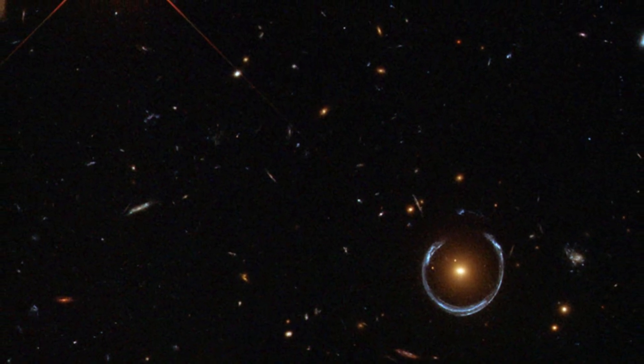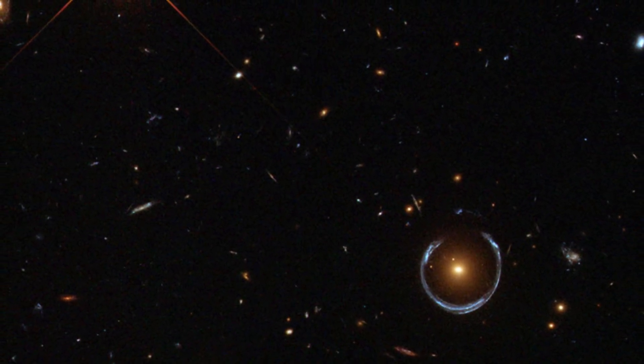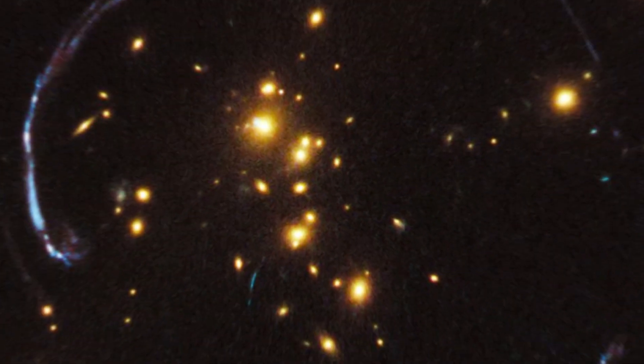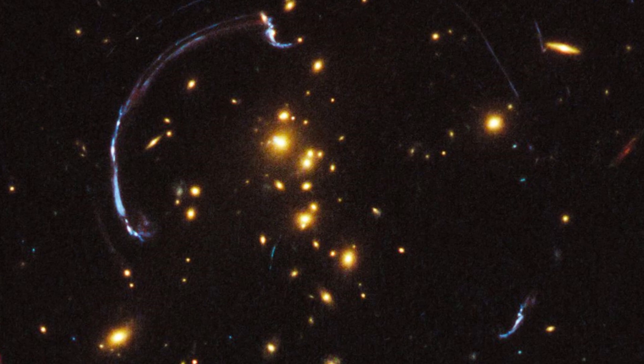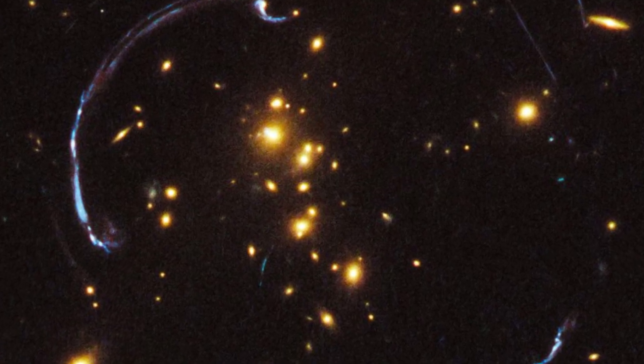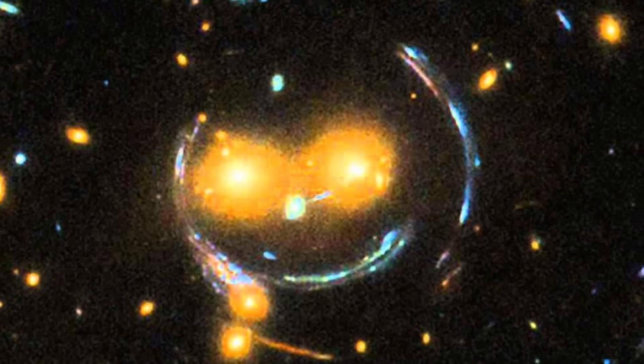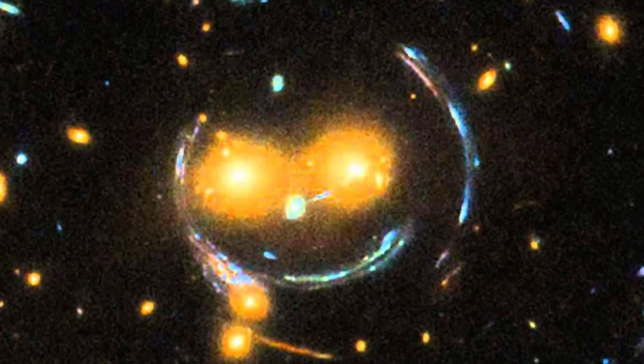Initially, it was entirely plausible that gravitational lensing might have caused these objects to appear larger than they actually were. This hypothesis aligned with the notion that the galaxies in question were not as colossal as they seemed, but rather their optical magnification created this illusion.